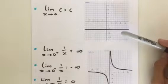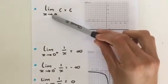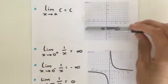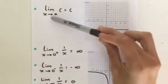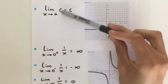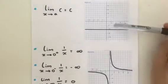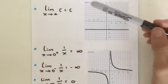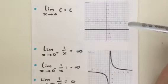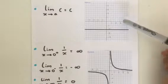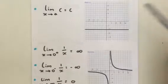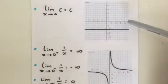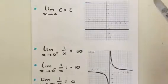The first, simplest limit is: the limit as x approaches a of c is equal to c. This is a horizontal line, meaning as x approaches some constant a, another constant — like y equals minus two in this example — will equal that constant, minus two. This makes sense because for any x value you pick, whether two or a hundred, you get that same y value, since it's a horizontal line.